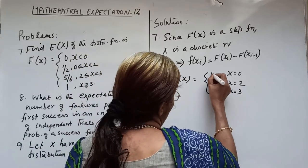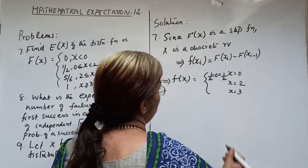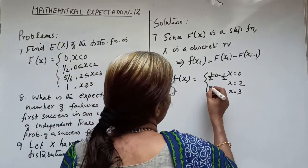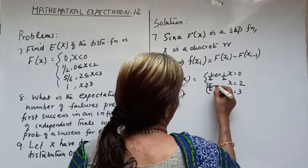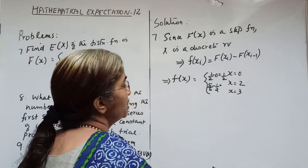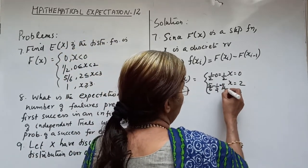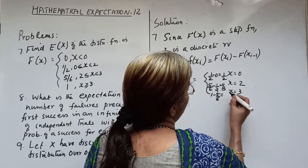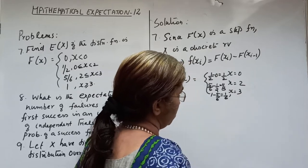For X = 0: probability = 1/2 − 0 = 1/2. For X = 2: probability = 5/6 − 1/2 = 2/6 = 1/3. For X = 3: probability = 1 − 5/6 = 1/6.